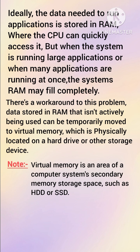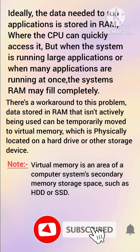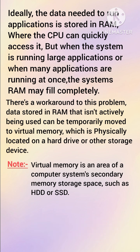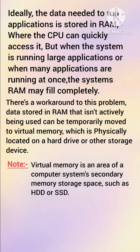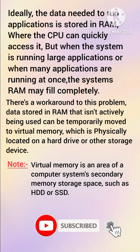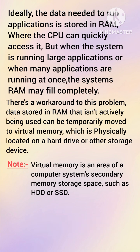Ideally, the data needed to run applications is stored in RAM where the CPU can quickly access it. But when the system is running large applications or when many applications are running at once, the system's RAM may fail completely. As a workaround, data stored in RAM that is not actively being used can be temporarily moved to virtual memory, which is physically located on a hard drive or other storage device, such as a hard disk drive or solid state drive.